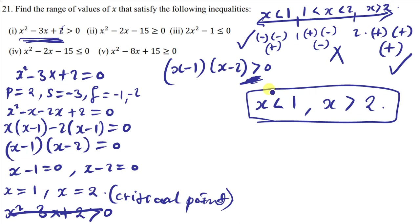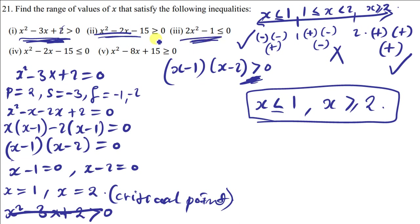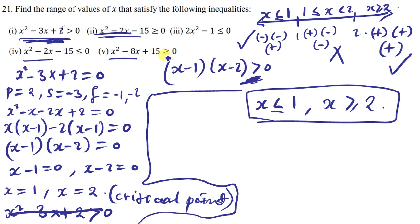The same way I solved this one is the same way you solve the others. First find the critical points, then test the regions. If there is a greater-than-or-equal-to or less-than-or-equal-to symbol, the solutions should also carry those symbols — that's the only difference. You can solve the remaining questions and submit solutions via my WhatsApp line.